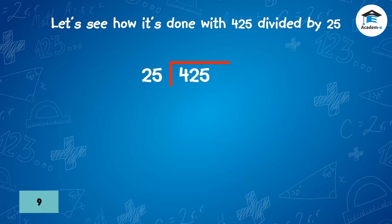Let's see how it's done with 425 divided by 25. The first digit of the dividend 4 is divided by the divisor. The answer from the first operation is multiplied by the divisor. The result is placed under the number divided into. Now we subtract the bottom number from the top number.